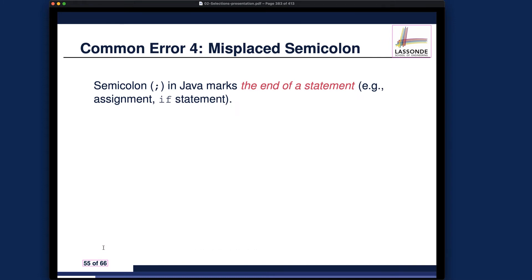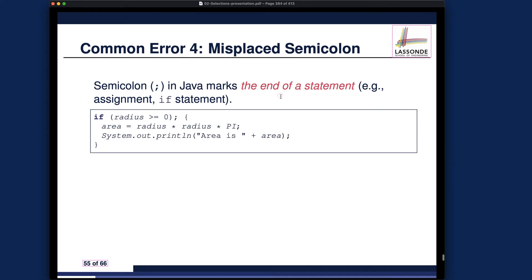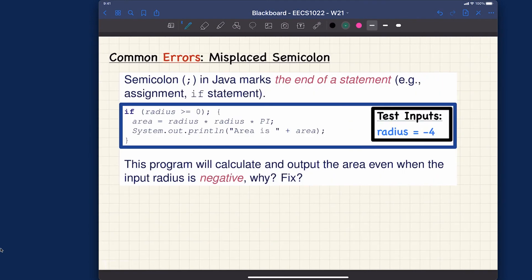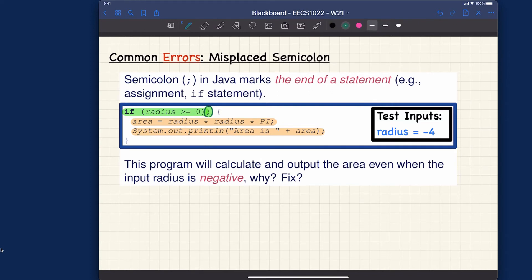Common error number four: in Java, a semicolon marks the end of a statement. Take a look at this program — do you see anything wrong? If I showed you this code directly, it would be very difficult to spot the error. The error is around here. Because the semicolon marks the end of the if statement, this one here is the entirety of the if statement, and the remaining two lines do not belong to it — they're not treated as the branch body. Just one symbol can make such a huge difference.